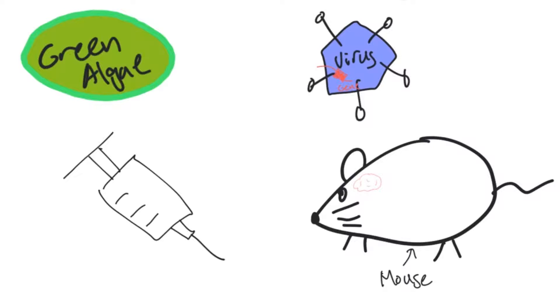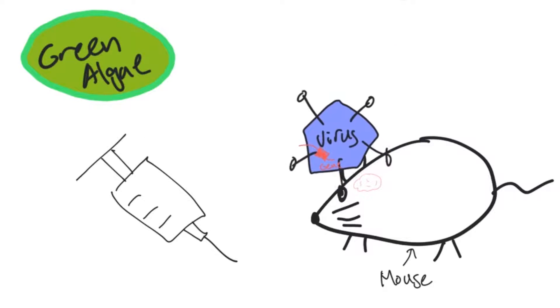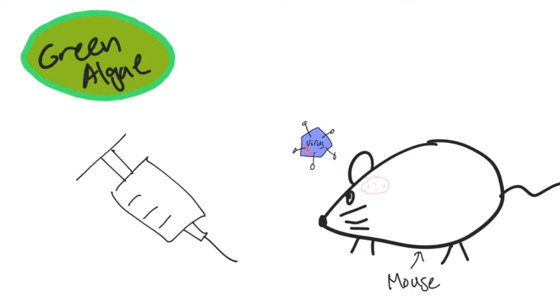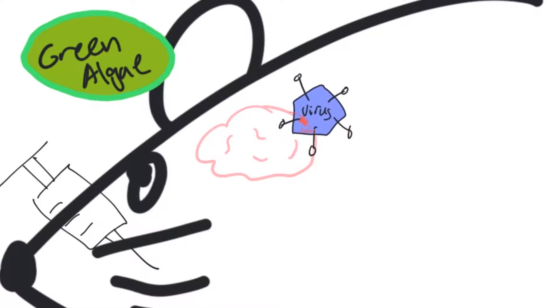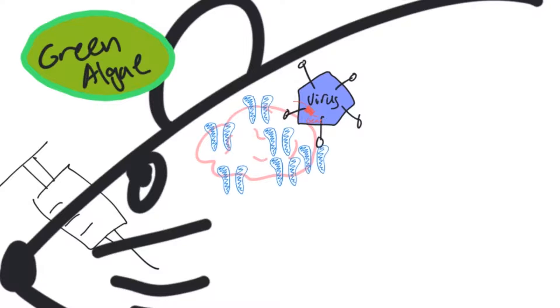The virus is then injected or allowed to infect the target animal, in this case a mouse. After the virus infects the mouse, it'll enter its brain and deliver the gene. Because the gene coded for channelrhodopsin-2, the brain will start producing channelrhodopsin-2 as well.